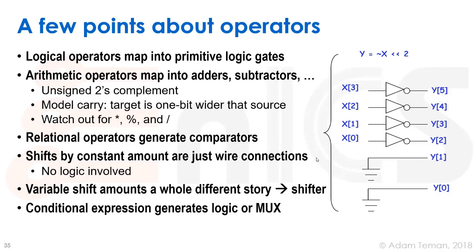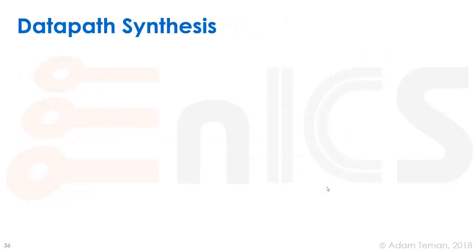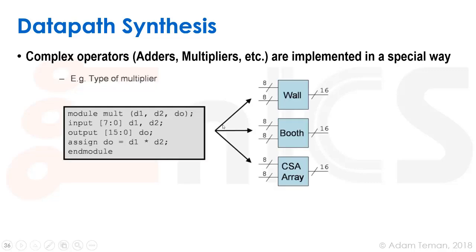Conditional expressions like an if or a case obviously make logic such as multiplexers. Data paths are very interesting and important — adders, multipliers, and so forth, as we said, are complex. They have a lot of meaning, and you probably learned in a previous course that there are different ways to implement them.